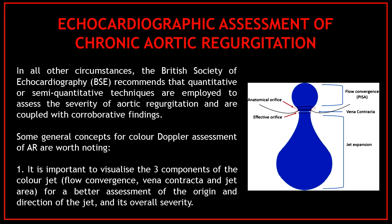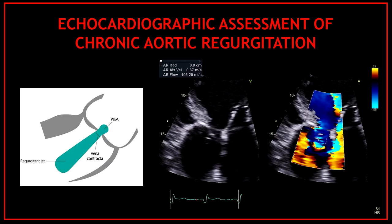Some general concepts for color Doppler assessment of aortic regurgitation are worth noting. First, it is important to visualize the three components of the color jet: flow convergence, vena contracta, and jet area, for a better assessment of the origin and direction of the jet. Here in these pictures is an example of the three components: first the flow convergence zone, followed by the vena contracta, and then the regurgitant jet area.